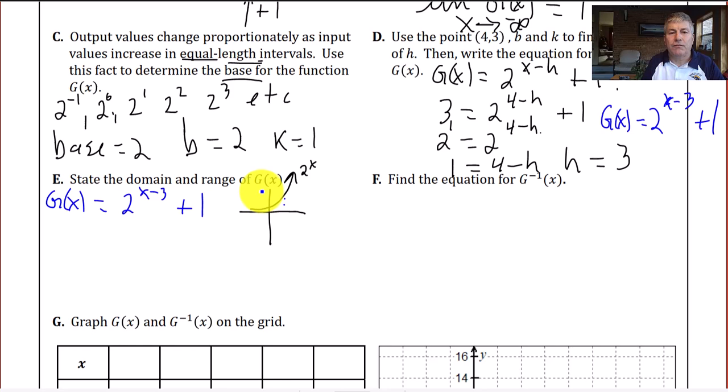We're asked to state the domain and range of g of x. Well, g of x is 2 to the x minus 3 plus 1. Well, 2 to the x, our domain is all real numbers, and our range is all the y's greater than or equal to 0. But now that we've taken our graph and we've shifted it up one unit, and all these points have been shifted three units to the right, our new graph is going to look something like this. So we can see our domain of the blue is still all real numbers. So we can say our domain goes from negative infinity to infinity. But our range has been shifted up one unit. We don't have any y's now less than 1. And since I don't have any y values below 1, our range goes from 1 to infinity.